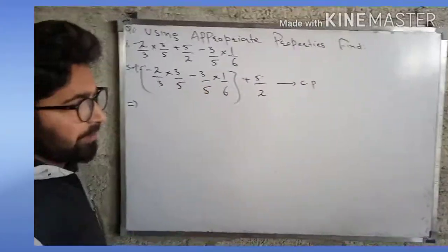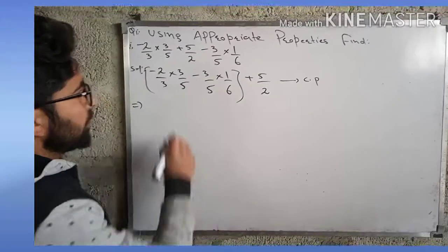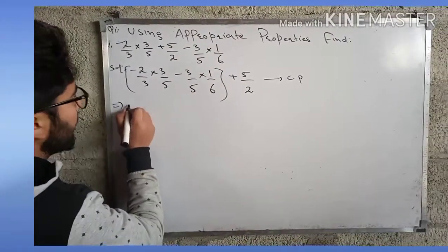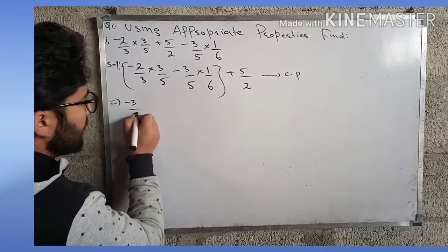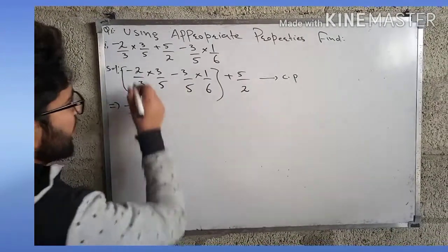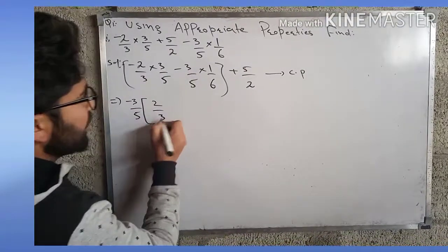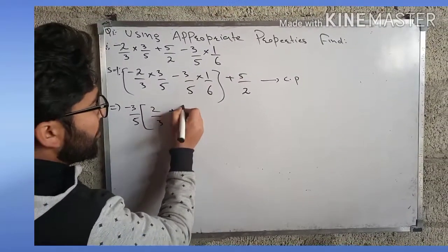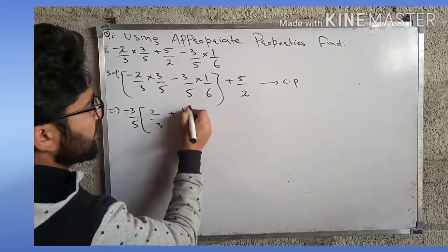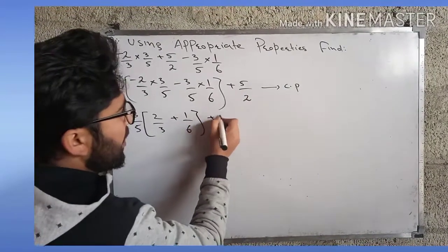So here we have -3/5. We will take it common. That is -2/3 × 1 + 1/6 + 5/2. So here we can write it as -3/5.